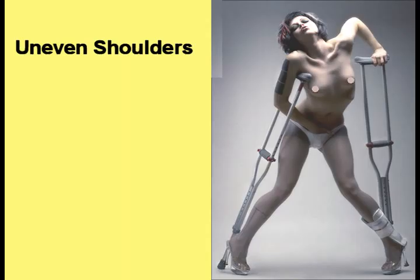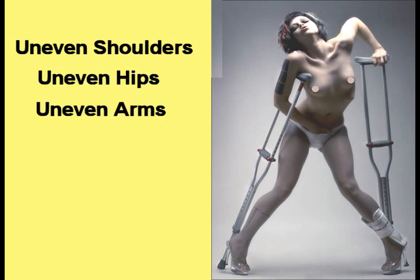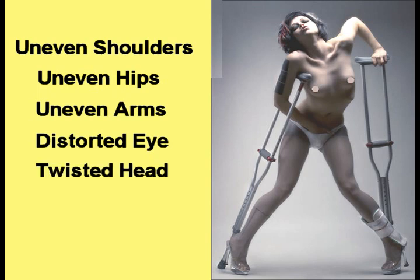The woman has uneven shoulders, uneven hips, uneven arms, a distorted eye, and a head that is twisted about on her neck.